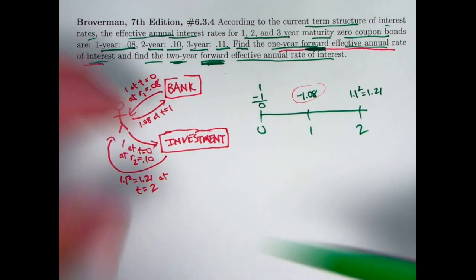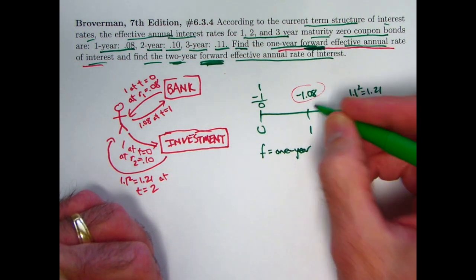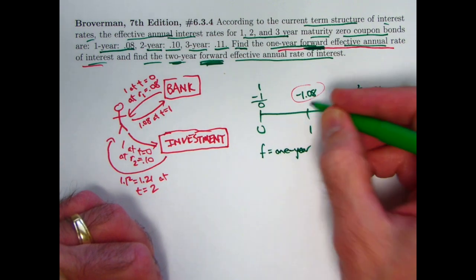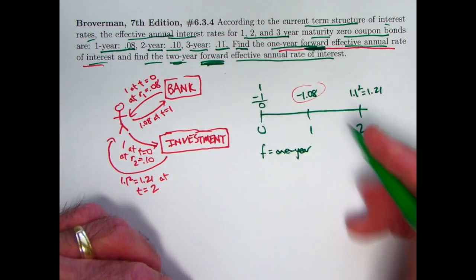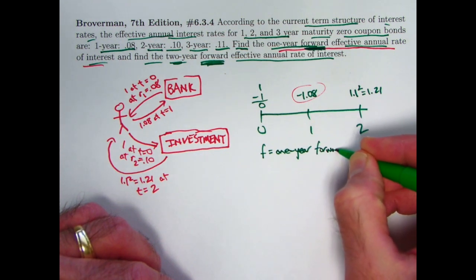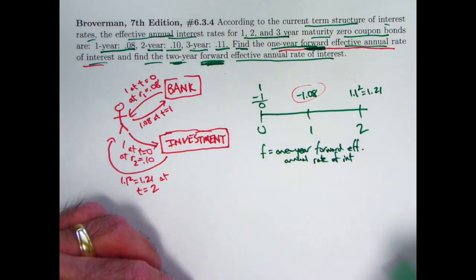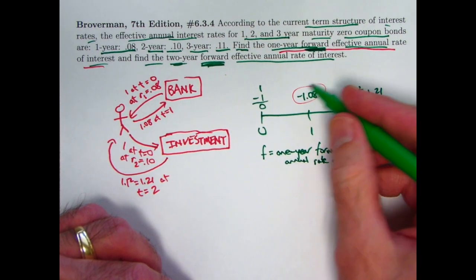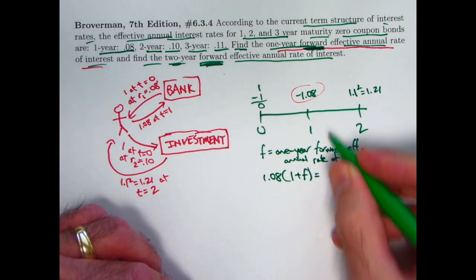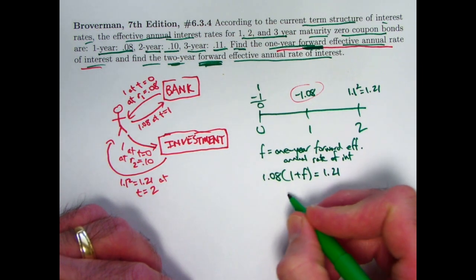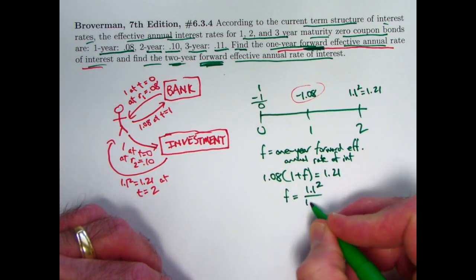Let's denote that by F. F is the one year forward effective annual rate of interest — the one year corresponds to the fact that the investment is effectively made at time one. From our perspective, it's like investing 1.08 at time one. So 1.08 times (1 + F) equals 1.21. Solving for F: F equals 1.1 squared divided by 1.08 minus one.